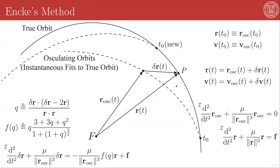You have your ideal two-body orbit, whose position vector at any given time is given by R osculating, much in the way we had when we did our Clohessy-Wiltshire analysis. You also have your true orbit, whose position in time is given by the orbital radius vector R(t). The difference between these two vectors is given by the vector delta R of t.